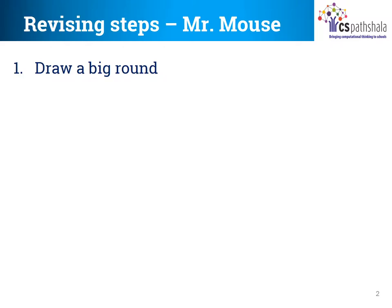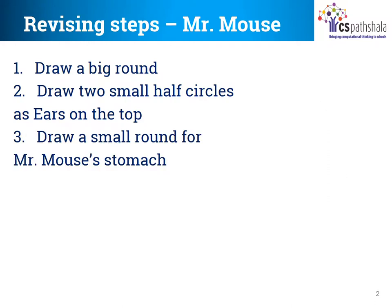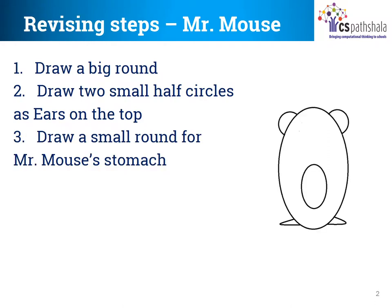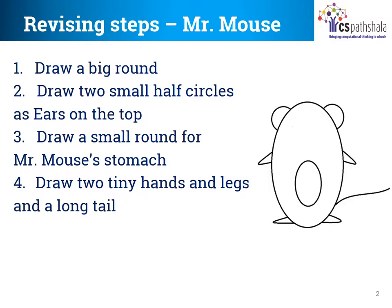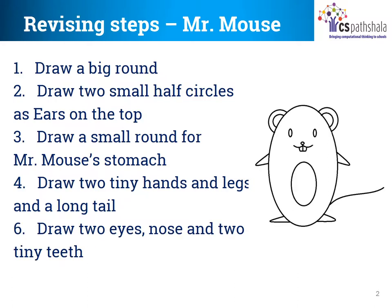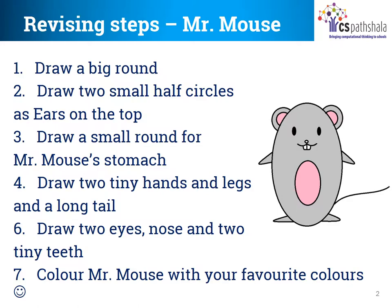First, draw a big round. Then draw two small half circles as ears on the top. Step number three: draw a small round for Mr. Mouse's stomach. Step number four: draw two tiny hands and legs and a long tail. Step number five: draw two tiny eyes, nose, and two tiny teeth. And finally, you can color Mr. Mouse with your favorite colors as you like.